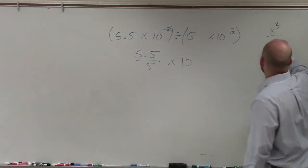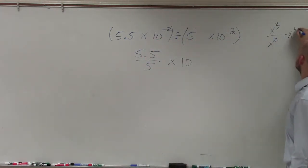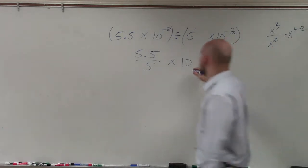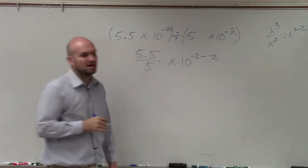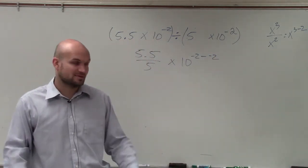Right? Just like if I had x cubed divided by x squared, that equals x 3 minus 2. So in this case, I'm going to have negative 2 minus a negative 2. And I forgot to change the powers on this one. But here would be a case where it's going to be 0.